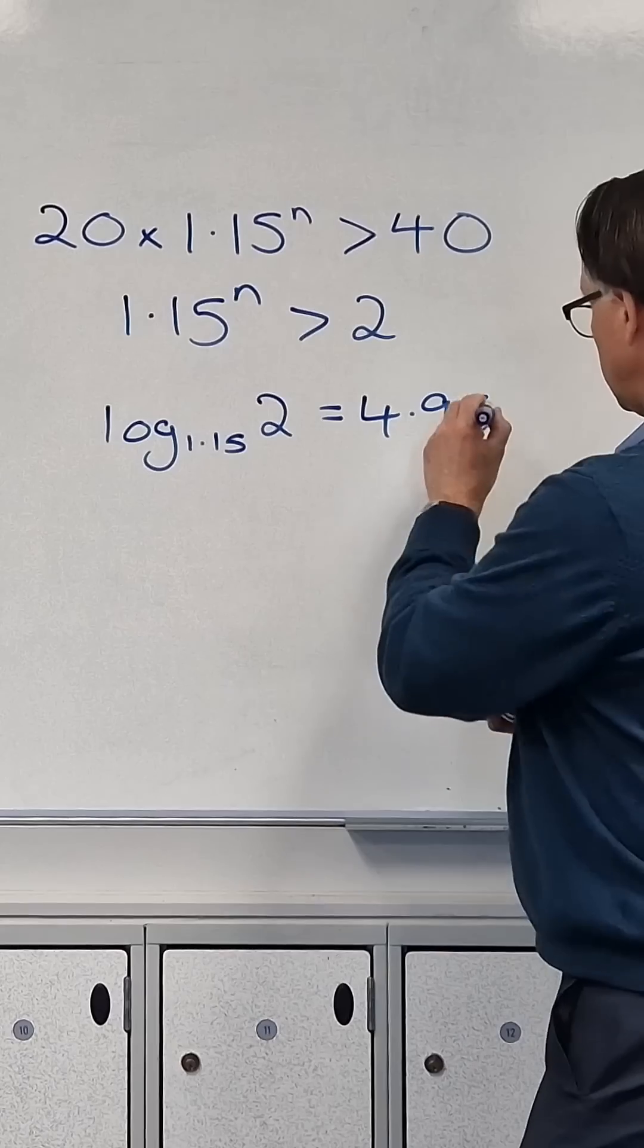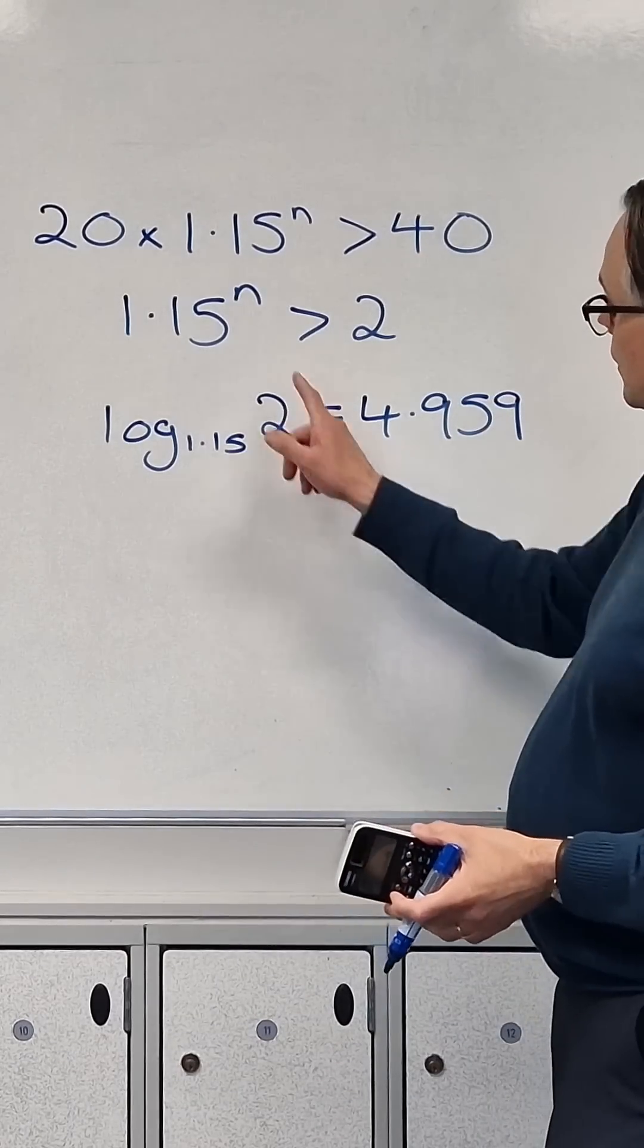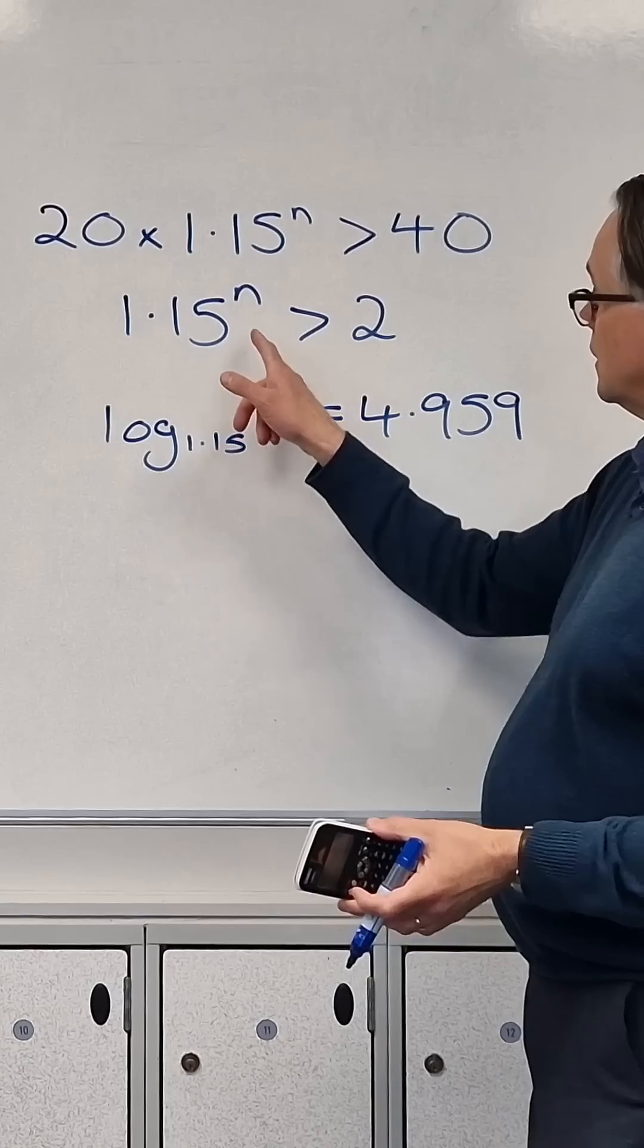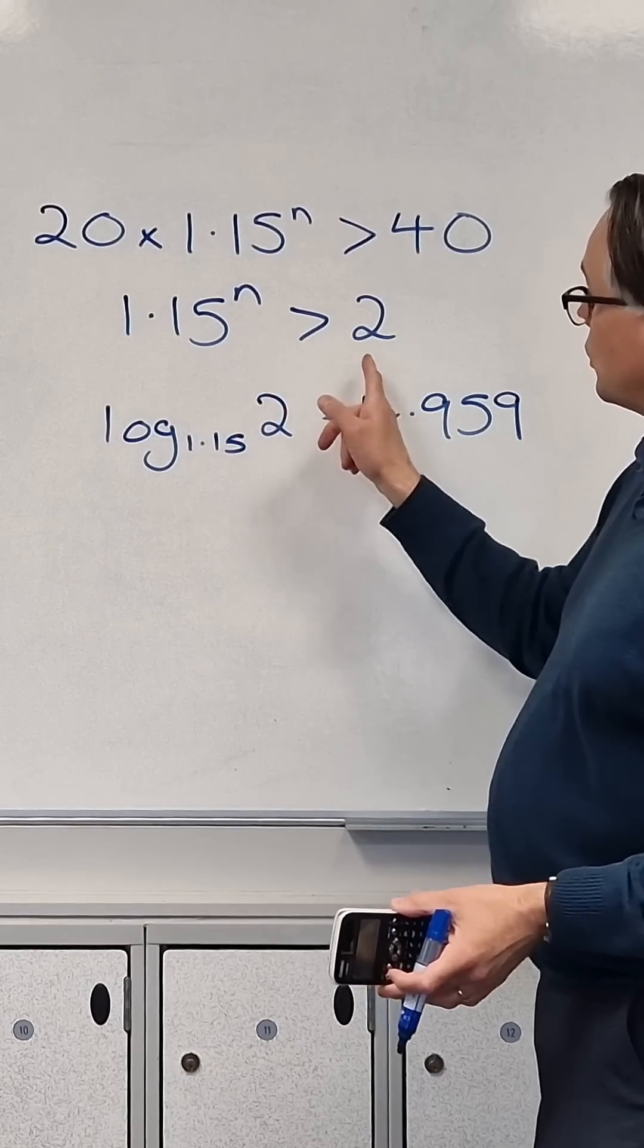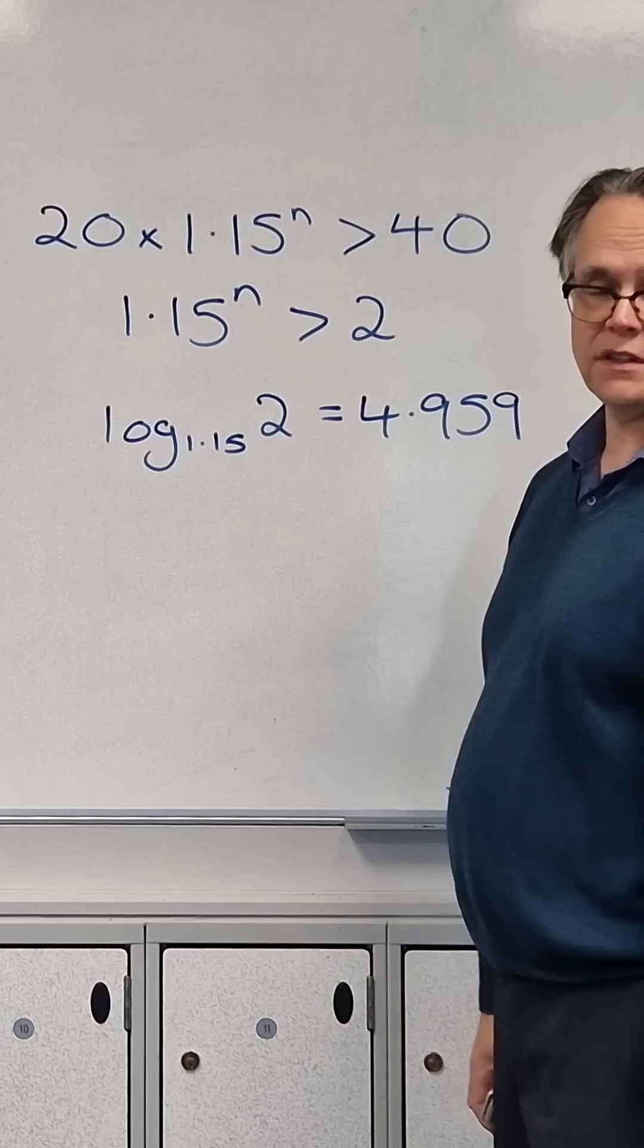And the answer is 4.959, which means that it's somewhere between 4 and 5. So after 4 years it won't quite be £40, but by 5 years it will be slightly over £40. So the answer is 5.